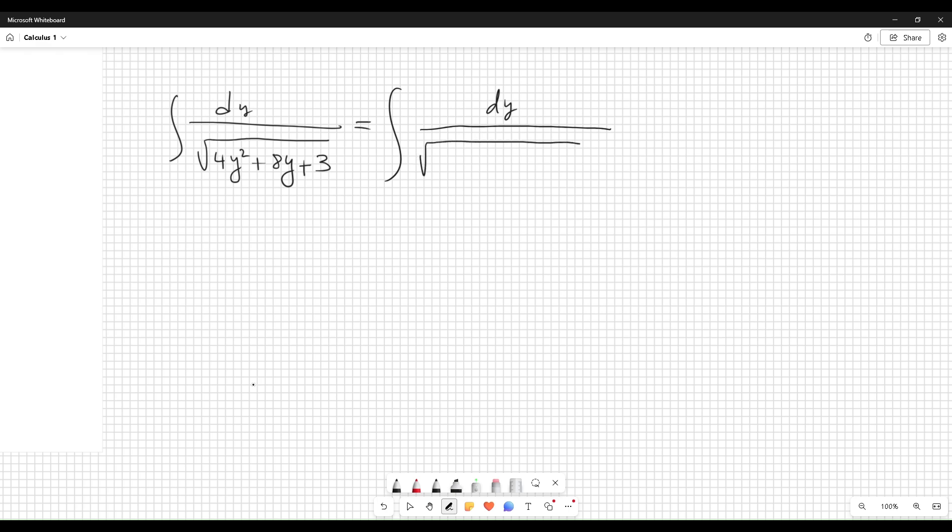Inside the square root, I factor out 4 for a moment. We have y squared plus 2y, plus we complete the square. The completed square is 2 divided by 2, which is 1, squared equals 1.